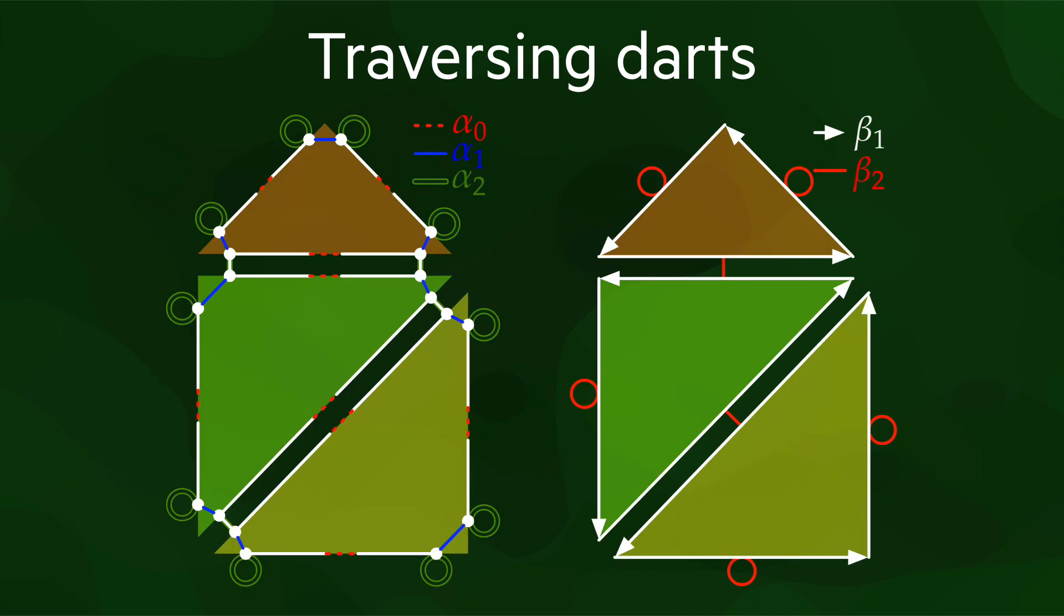Here you can see an example with the three polygons using the simplified representation. Note how all the operations are involutions except for beta 1.